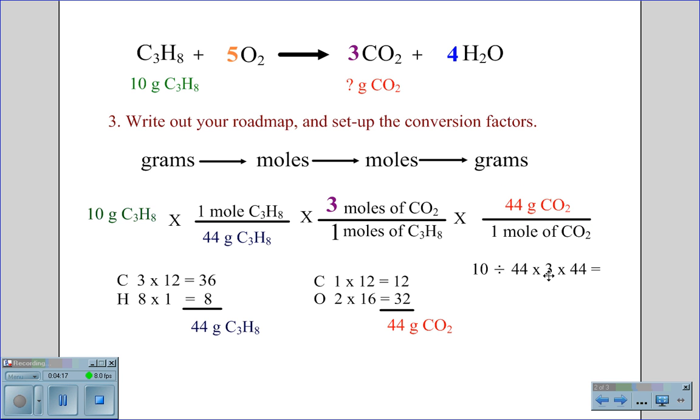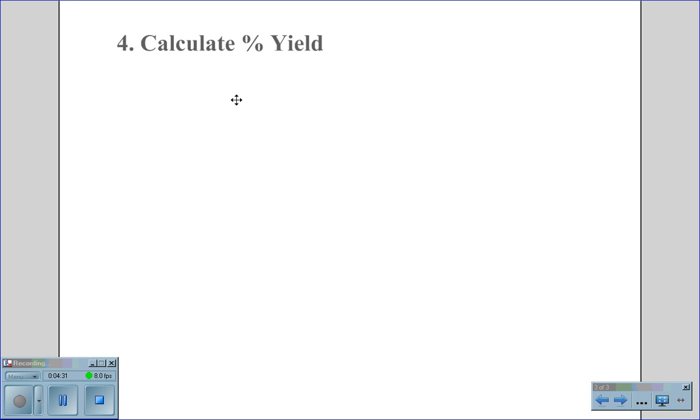10 divided by 44 times 3 times 44, which gives us 30 grams of carbon dioxide as our theoretical yield. Now that we have found our theoretical yield, we are ready to calculate the percent yield.